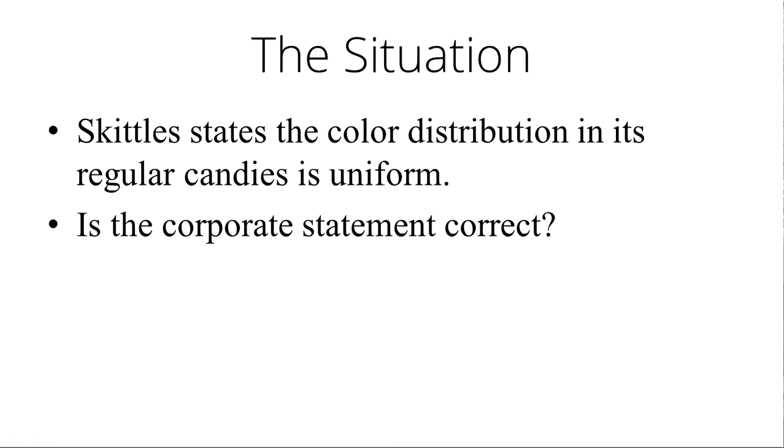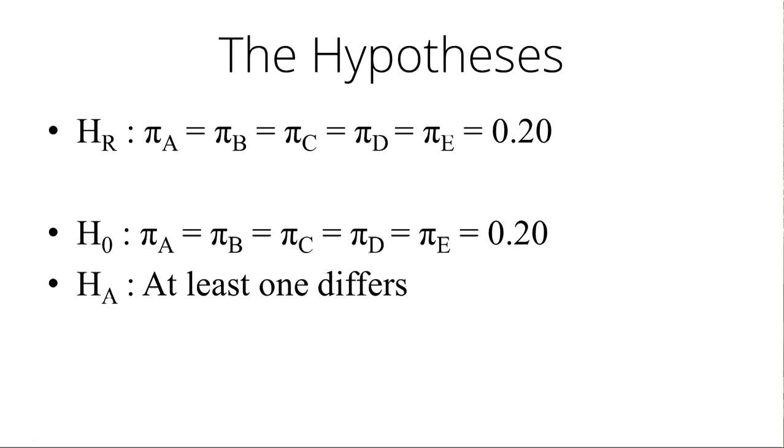It states that the color distribution in its regular candies is uniform. That means that the proportion of purples is equal to the proportion of yellows and equal to the proportion... I don't know what the actual colors are. So here's the question. Is the corporate statement correct?